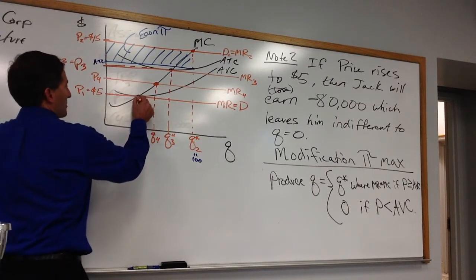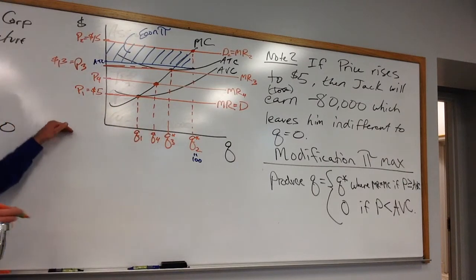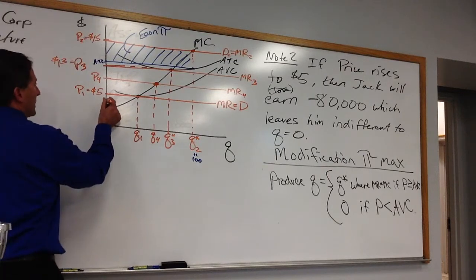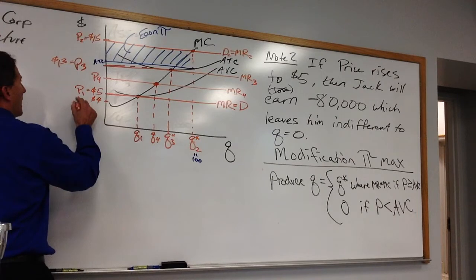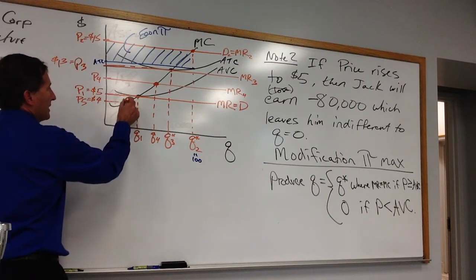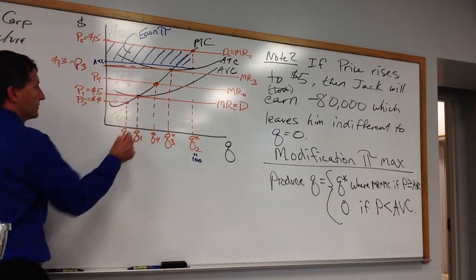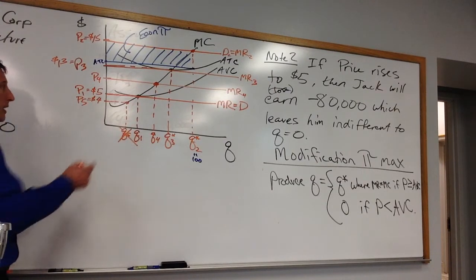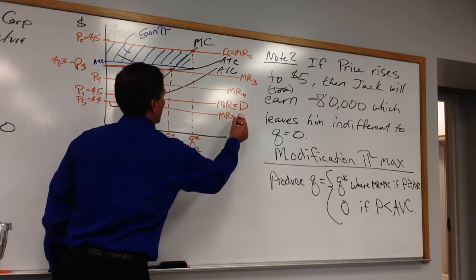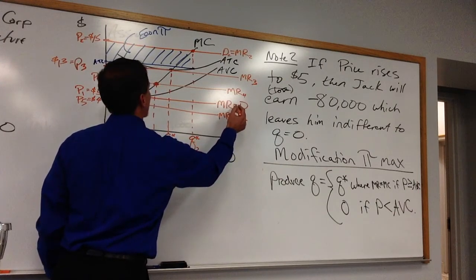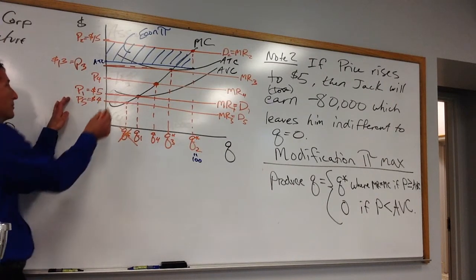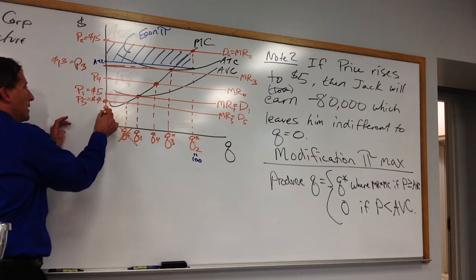Price falls down to, finally, we get back to P1. The optimal quantity would be Q1. Now, here's the catch. If we drop down to $4 at P5, the profit-maximizing quantity told us to do Q5. But we don't want to do that. Marginal revenue equals marginal cost. We can still calculate that. But we don't want to do that. We'd be better off producing how much? Zero. And at $3, zero. And $2, zero.